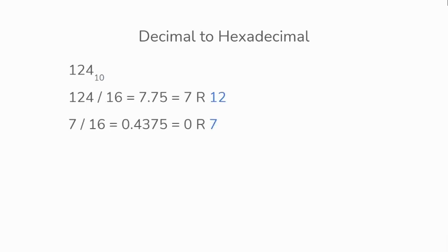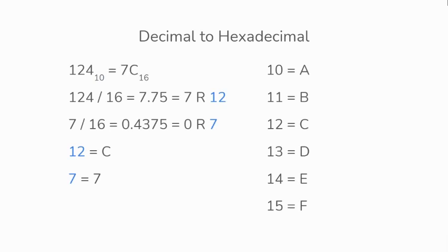Then we have a look at the remainders and write them down. And then we see which values they would correspond to. So the 7 will correspond to a 7, and the 12 will correspond to C. So the decimal value of 124 converted to hexadecimal will be 7C.